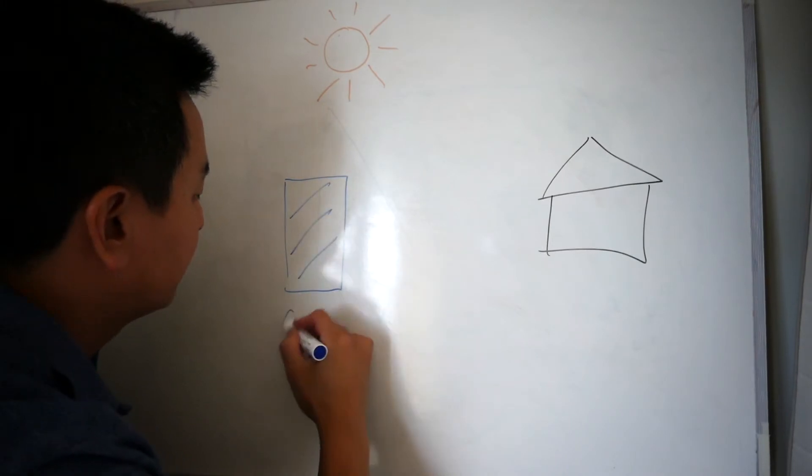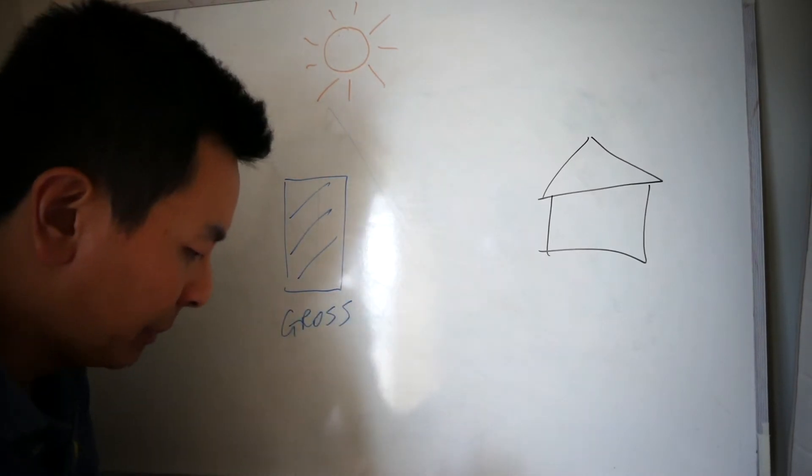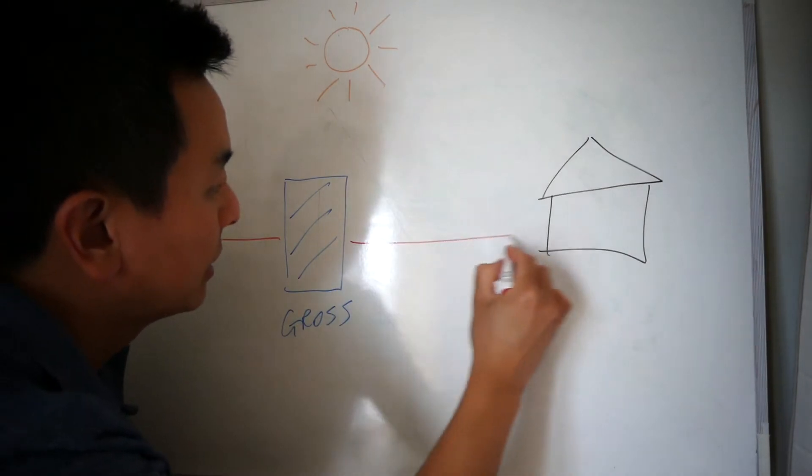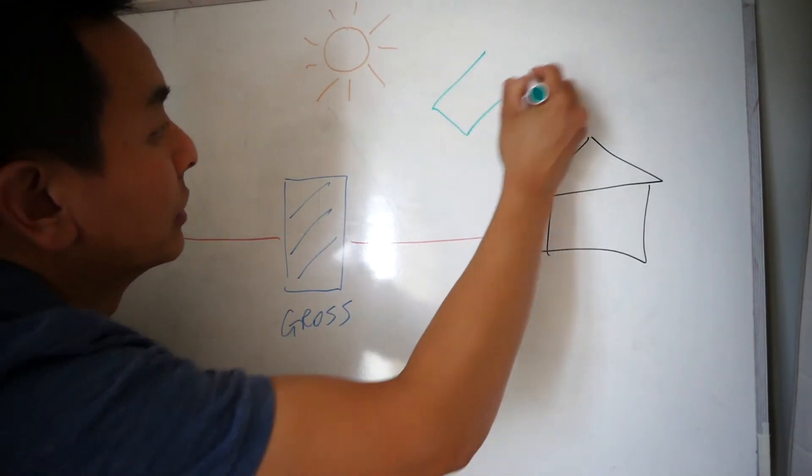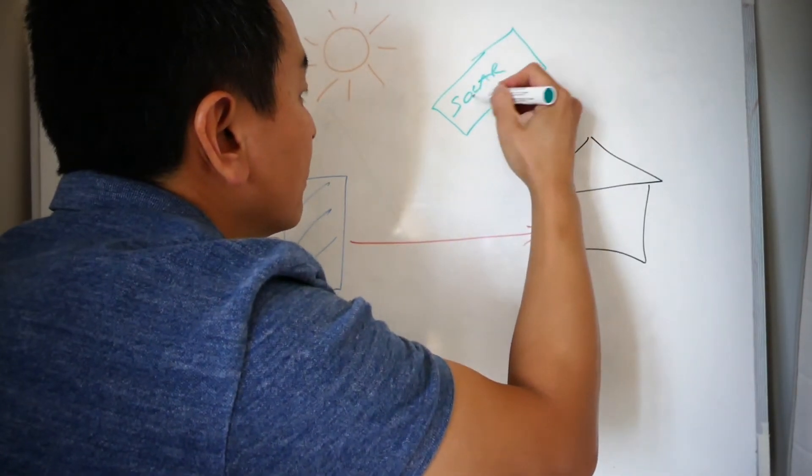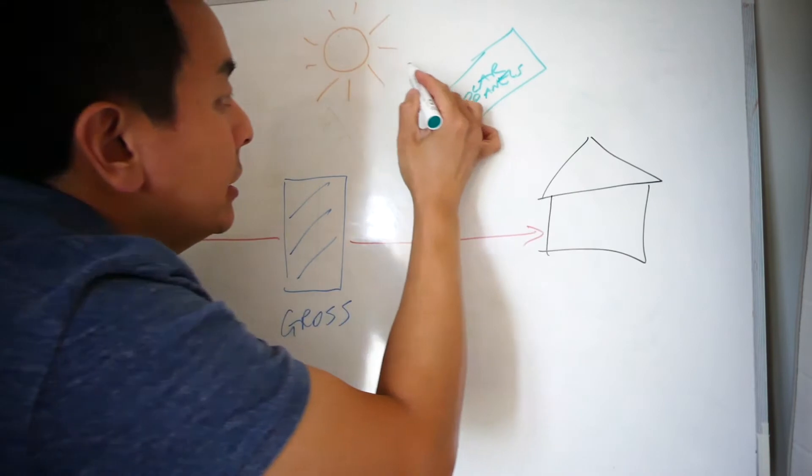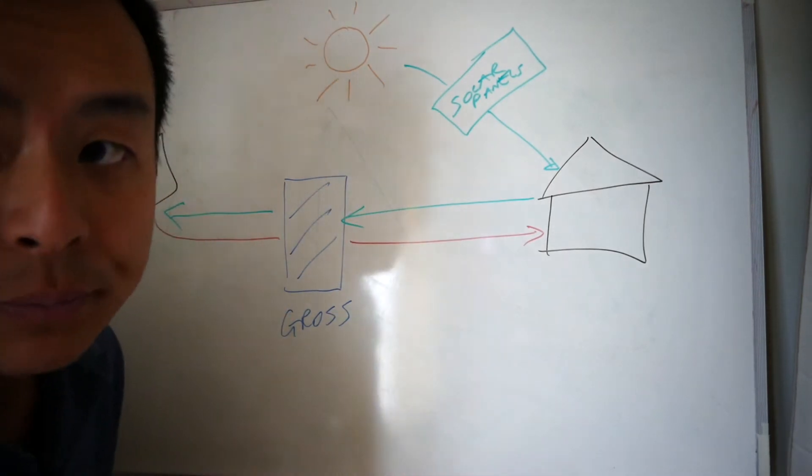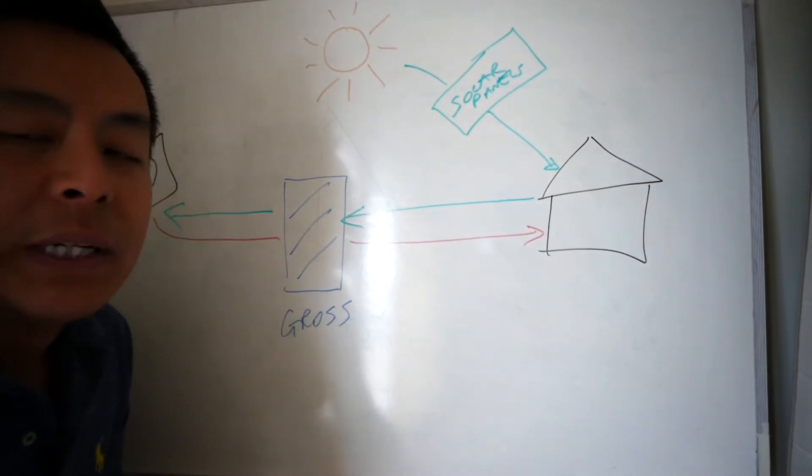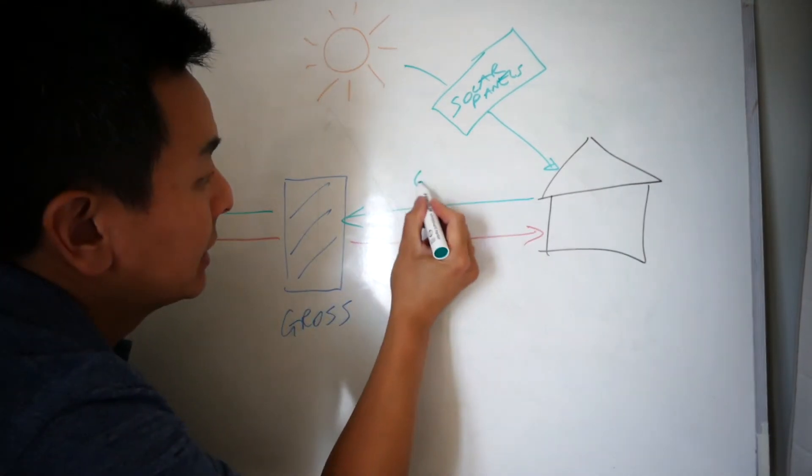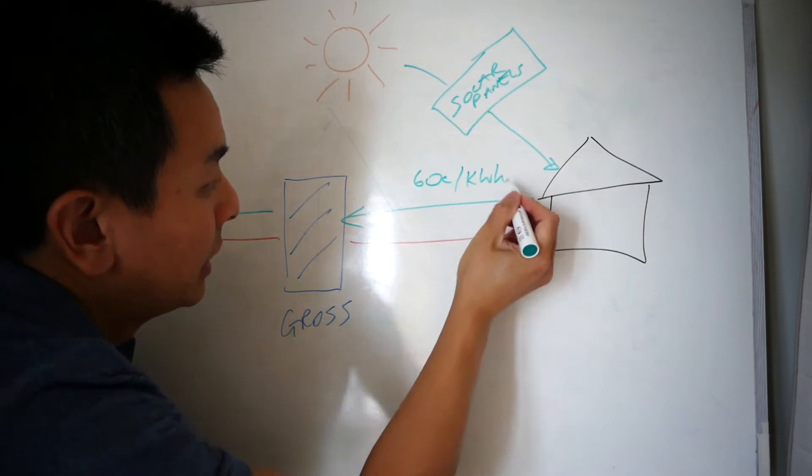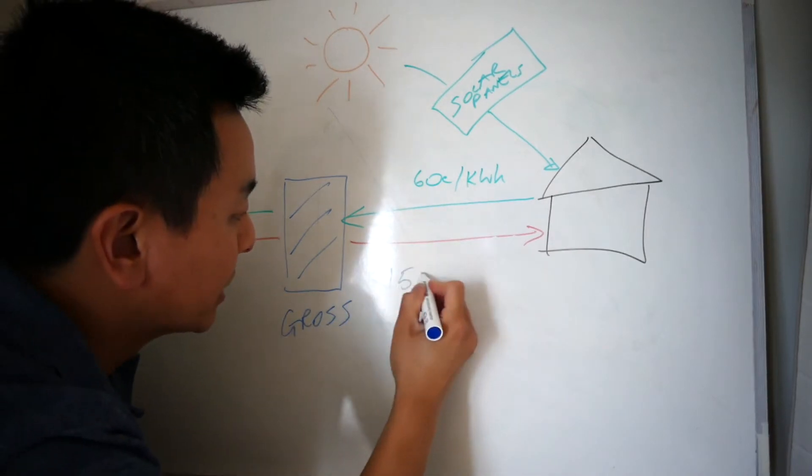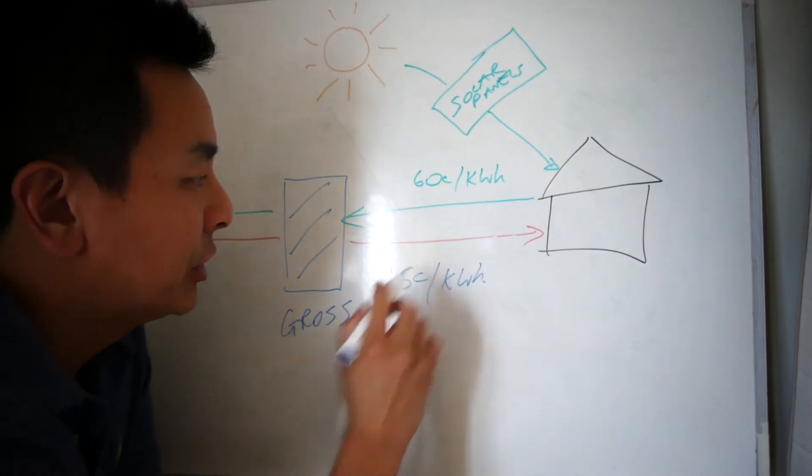So this was the old gross meter. It was gross because you get charged for anything going in from the grid to your house and if you have solar panels, for example, let's put solar panels here. Anything you generate on your house on your roof and you feed back to the grid, you get a credit for as well. So for example, back in the early 2010s, the feed-in tariff in New South Wales was a fantastic 60 cents per kilowatt hour.